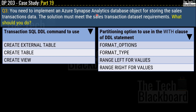Question number three: You need to implement an Azure Synapse Analytics database object for storing the sales transaction data. The solution must meet the sales transaction dataset requirements. You must answer on two levels — the T-SQL DDL command to use, and the partitioning option to use in the WITH clause of the DDL statement. Options for the first part are: CREATE EXTERNAL TABLE, CREATE TABLE, or CREATE VIEW — the correct answer is CREATE TABLE. For the partitioning option, the choices are: FORMAT OPTIONS, FORMAT TYPE, RANGE LEFT FOR VALUES, or RANGE RIGHT FOR VALUES — the correct answer is RANGE RIGHT FOR VALUES.